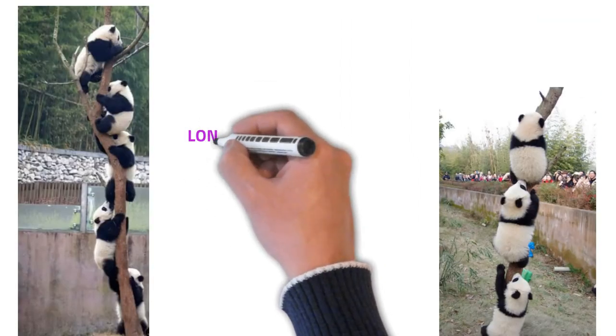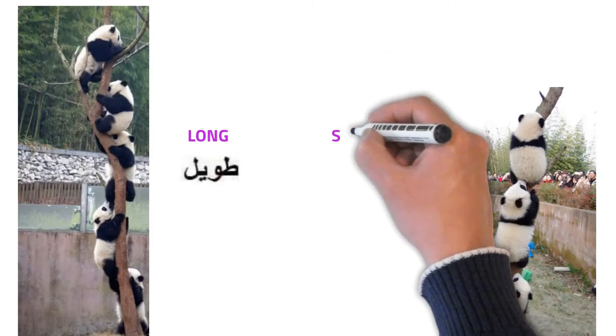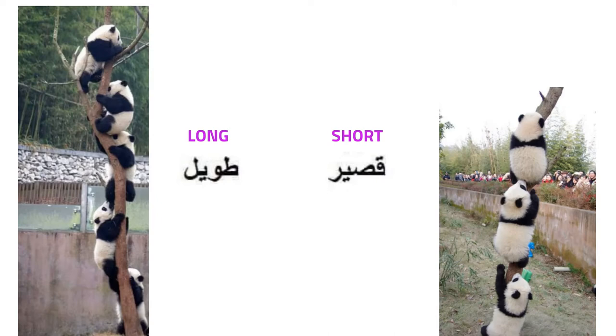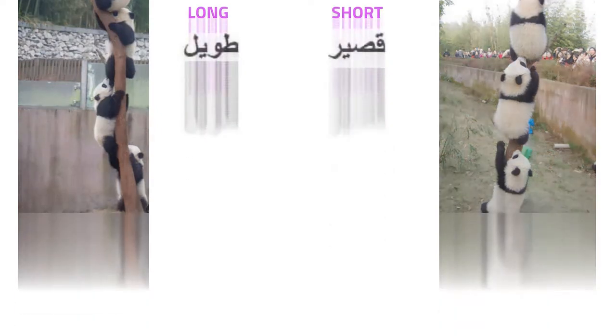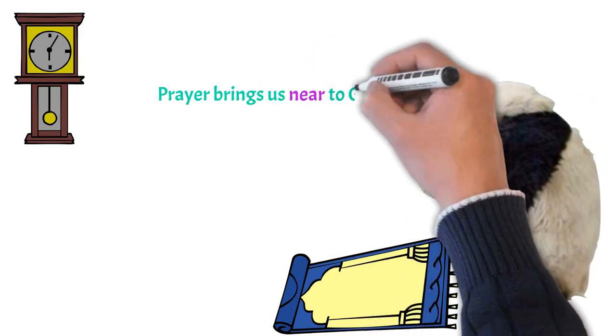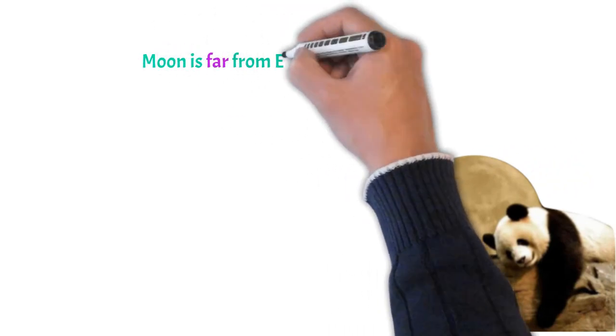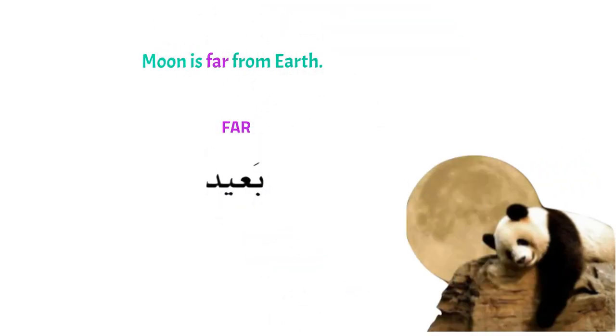The Arabic word for long is tawil. Tawil. And the Arabic word for short is kasir. Kasir. The Arabic word for near is karib. Karib. The Arabic word for far is ba'id. Ba'id.